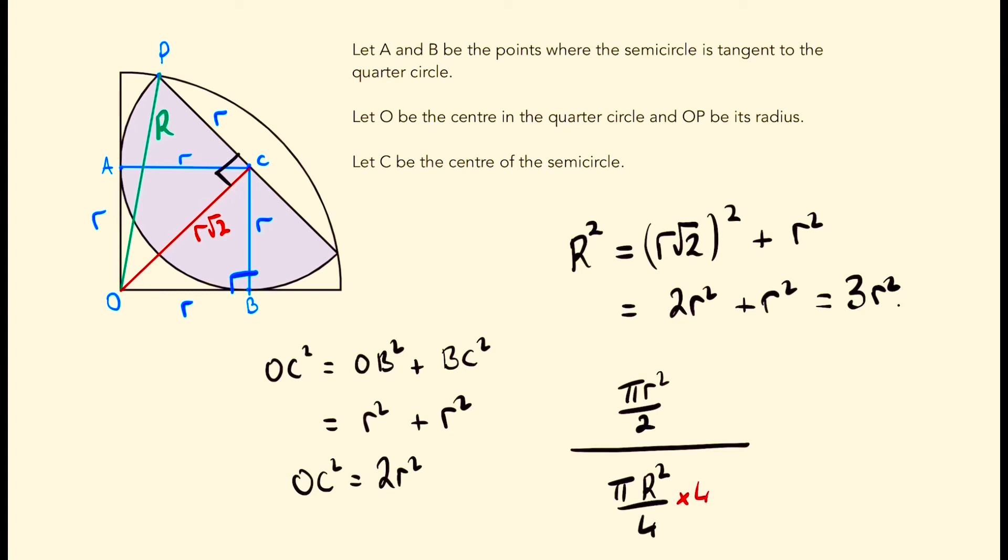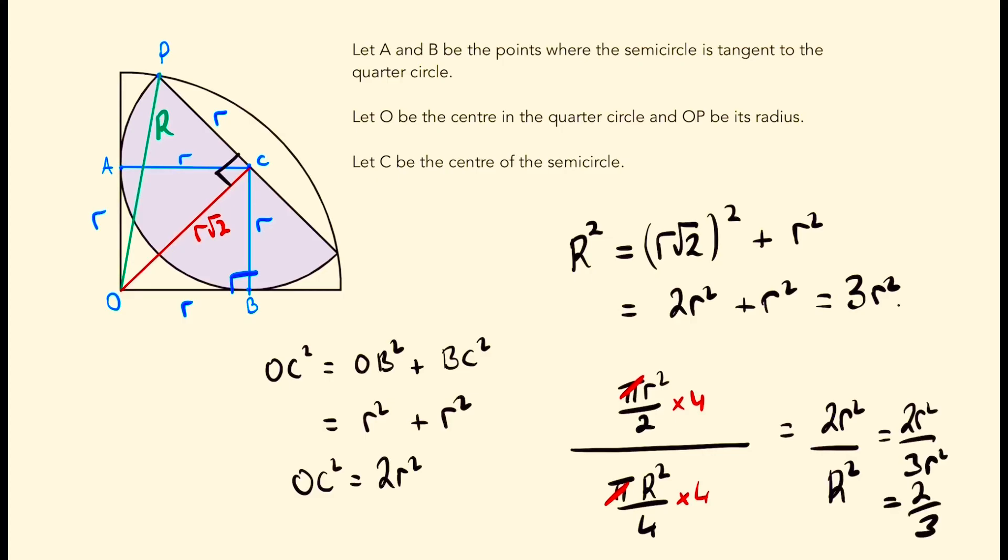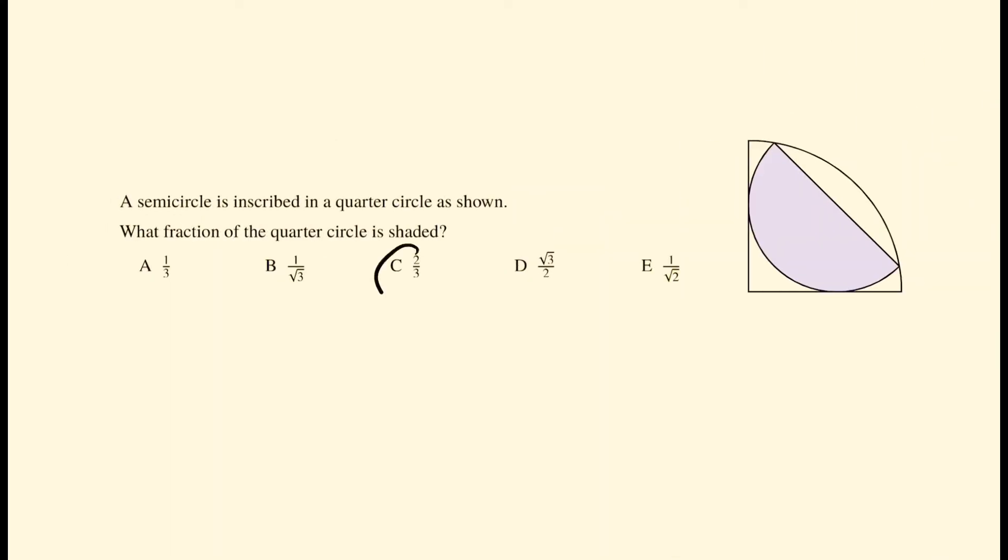We can multiply both of these by 4 and cancel out the π's to write this as 2R squared over capital R squared. Given that we already figured out that capital R squared is 3R squared, this becomes 2R squared over 3R squared, which is the same thing as 2 thirds. And so the answer to this problem is C, 2 thirds.